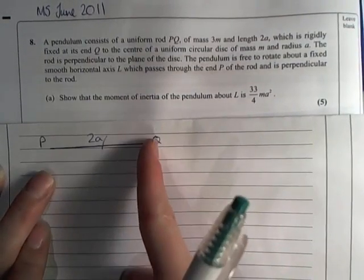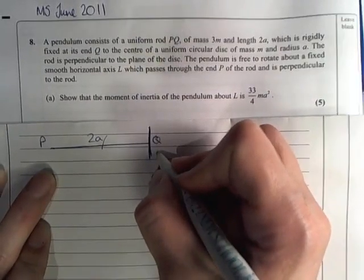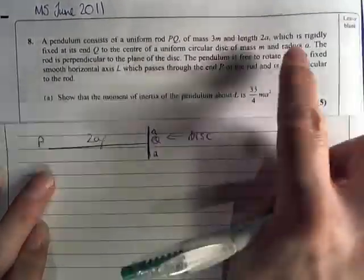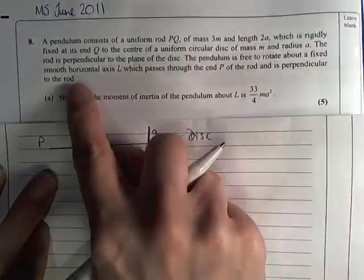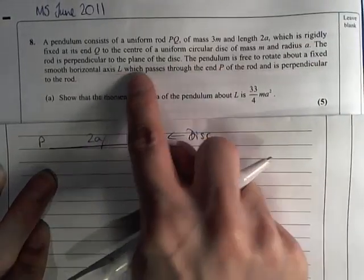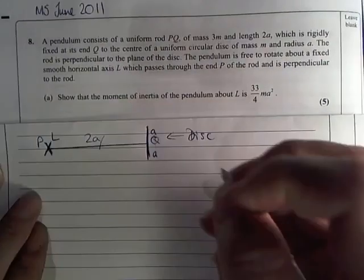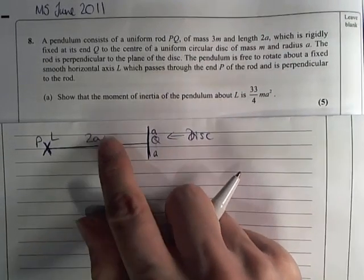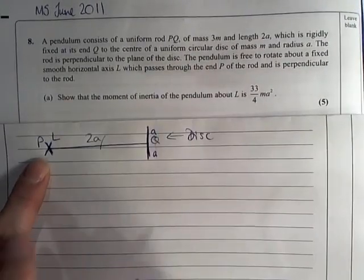The rod is perpendicular to the plane of the disk, so the rod is here and the disk is going to be here. The pendulum is free to rotate about a fixed smooth horizontal axis L which passes through the end P and is perpendicular to the rod.